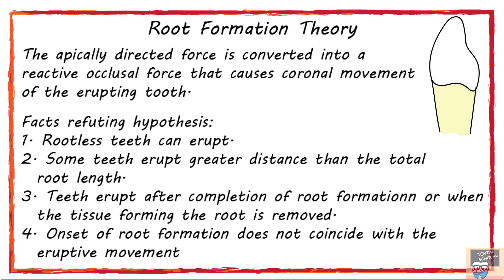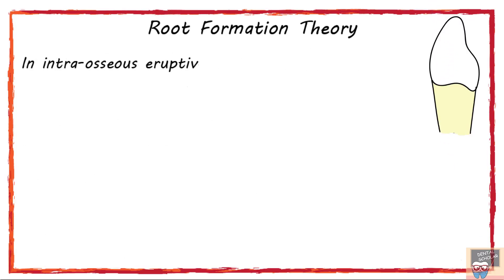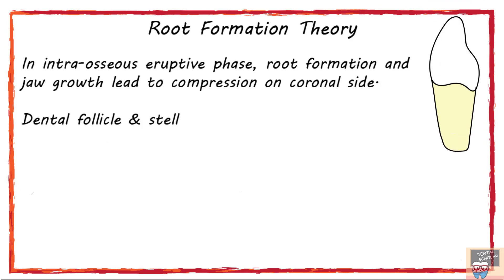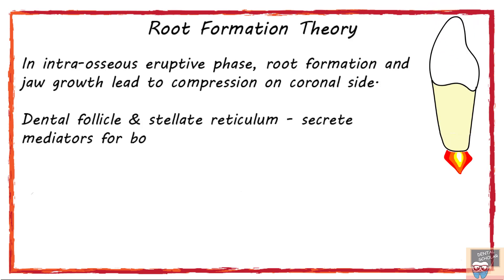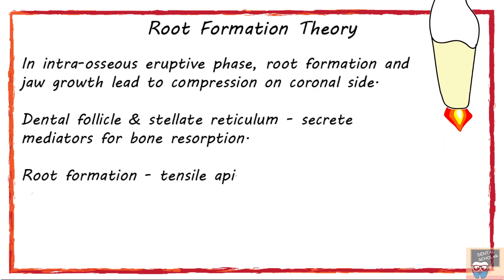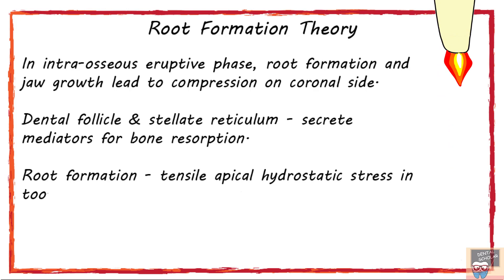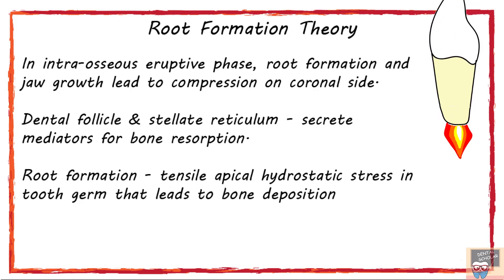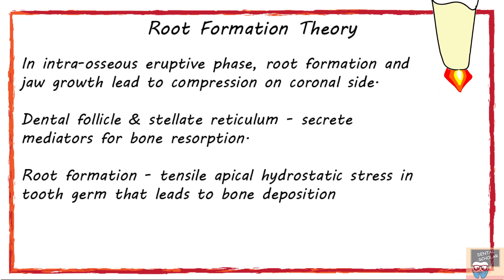The argument favoring this theory is that in the intraosseous eruptive phase, root formation and jaw growth lead to compression on the coronal side of the tooth. The dental follicle and stellate reticulum on the coronal side secrete mediators for bone resorption. Root formation leads to a tensile apical hydrostatic stress in the tooth germ, and tensile stress leads to bone deposition — so bone resorption coronally and deposition apically.